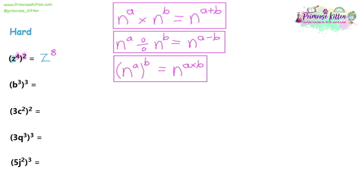We can do the same thing with question 2. The base is B, so write B. Then look at the powers: 3 and 3. 3 times 3 is 9. The answer is B to the power of 9. A common mistake would be adding those powers together — but remember your rules of indices: you add powers when it's a multiplication. Here we've got two sets of powers around a bracket, so it's going to be multiplication of the powers.